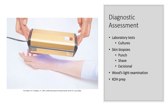Shave biopsies are shallow, using a scalpel to take off the top of typically moles or actinic keratosis to send to the lab for analysis — these are for low-risk lesions. If they come back positive, an excisional biopsy is done, which involves removing more tissue with a clean margin all around the lesion.